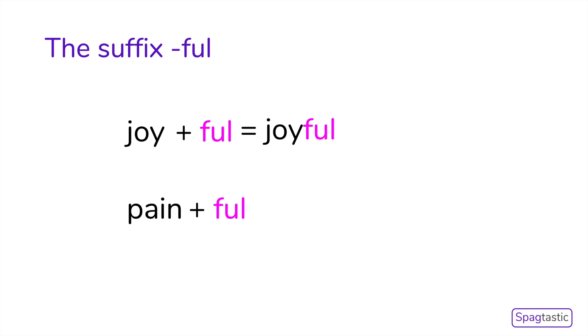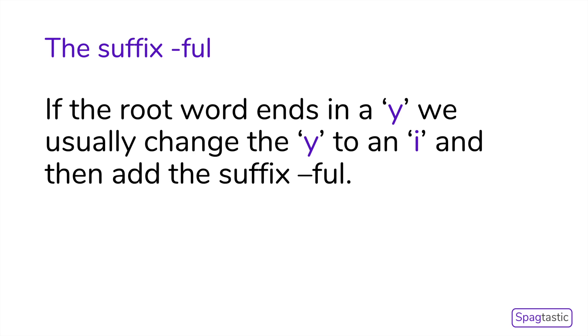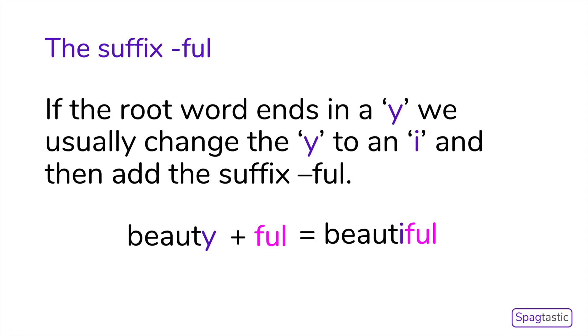When the root word ends in a y, we usually change the y to an i and then add the suffix -ful. Our root word is beauty, which ends in a y, so when we add the suffix -ful we have to change the y to an i and then add the suffix, making beautiful, which means full of beauty.